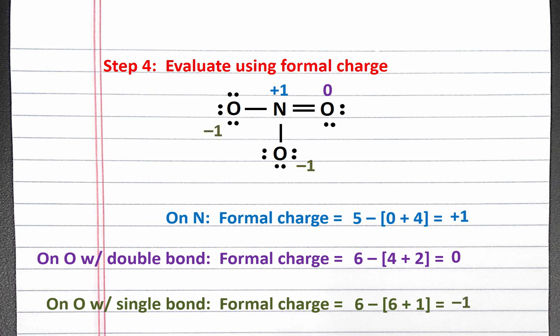Notice that if we add together the formal charge on all of our atoms, we'll get negative one, which is the charge on nitrate. Although we would like more atoms in the polyatomic ion to have zero formal charges, this is the best Lewis structure with oxygen and nitrogen following the octet rule.